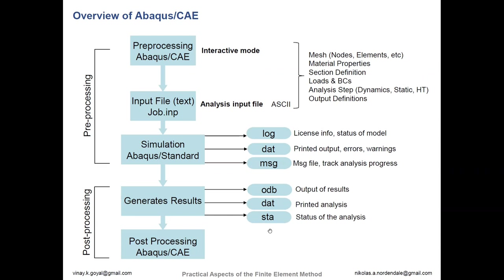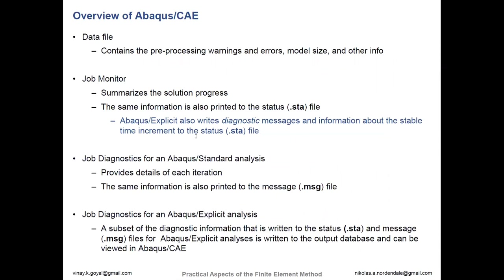Looking at the status file — these files are being generated as the model is run. However, if you are using everything within CAE and you actually run a model within CAE, you can view all of these live by going in the model tree. You can right-click on the job and say monitor, and all of these files will actually be viewable in a separate window, so you can view them live as the model runs.